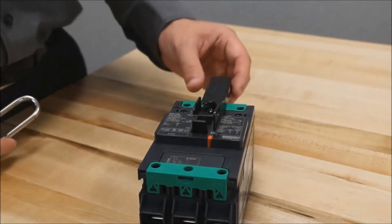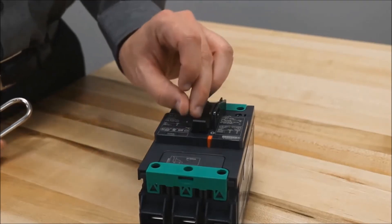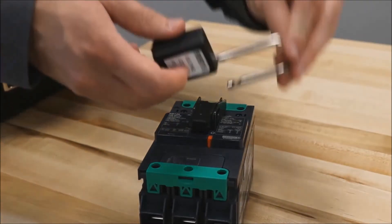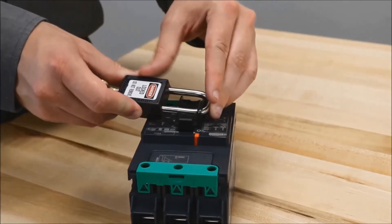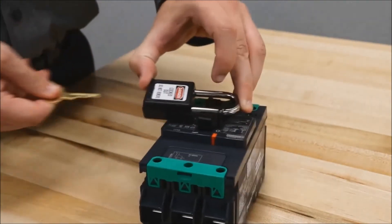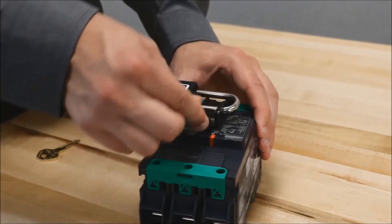Now that you have the padlock attachment installed, you will flip this forward and slide the padlock through that slot and then the breaker cannot be turned on.